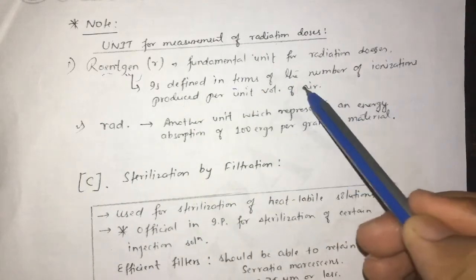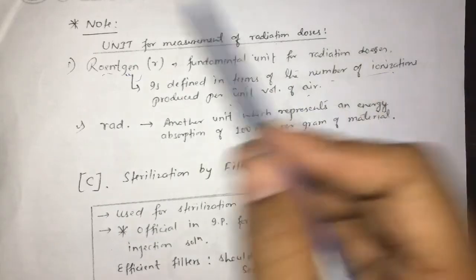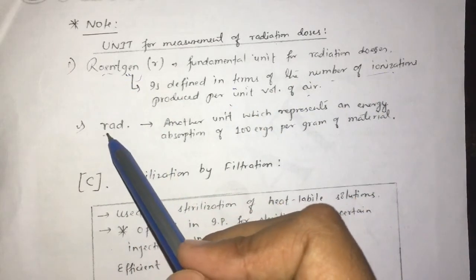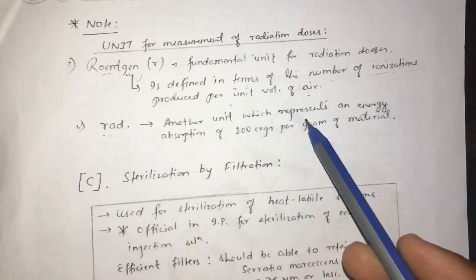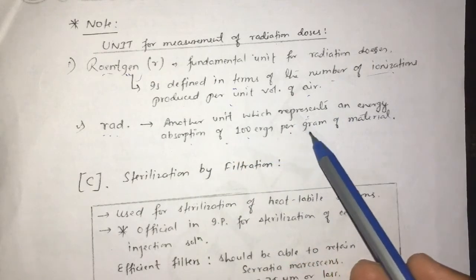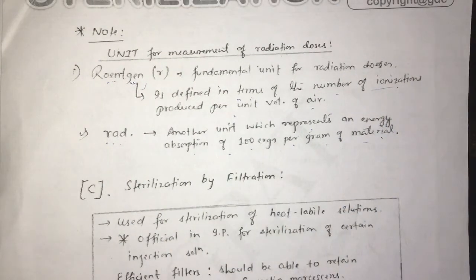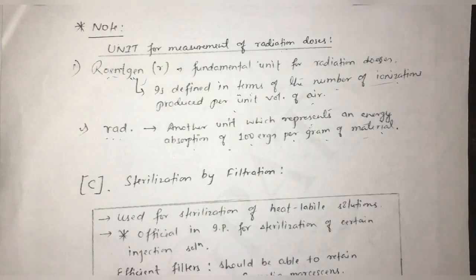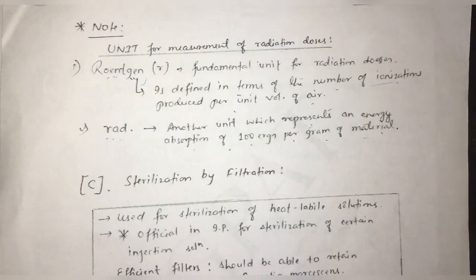The units of radiation dose: the first unit is defined by the number of ionizations produced per unit volume of air. The second unit is the rad, which represents energy absorption of 100 ergs per gram of material. The remaining two methods of sterilization will be discussed in the next part. Thank you for watching.